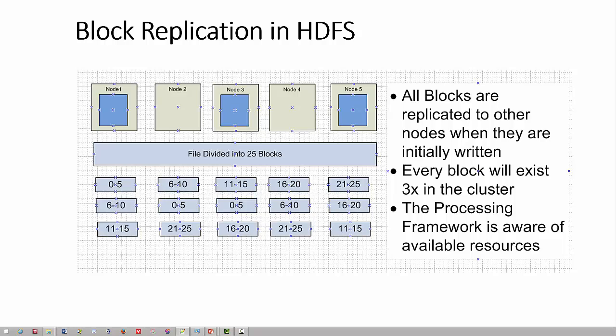The block replication count can be extended beyond the default of 3 if a certain file is expected to be read by more than three processes at a given time. Performance benefits can be obtained for so-called 'hot data'. Block replication is designed to provide resilience in Hadoop Distributed File System.